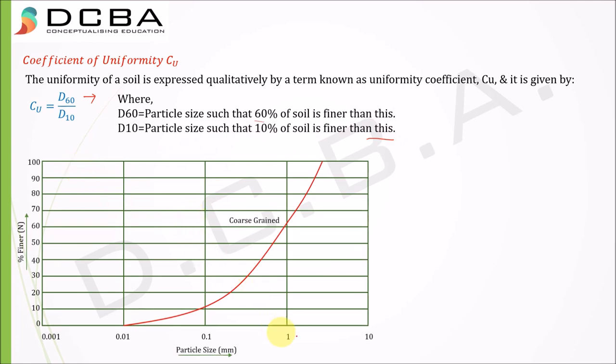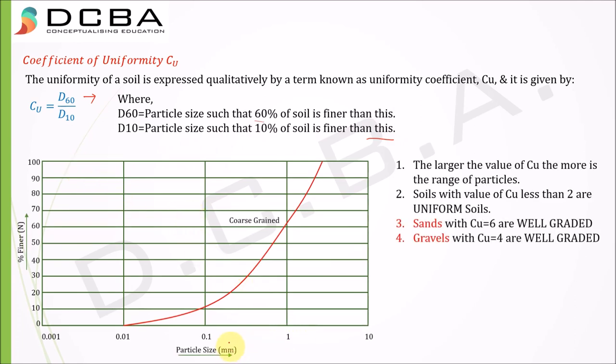The larger the value of Cu, the more is the range of particles. Soils with Cu less than 2 are uniform soils. Sands with Cu equals to 6 are well graded, and gravels with Cu equals to 4 are well graded.